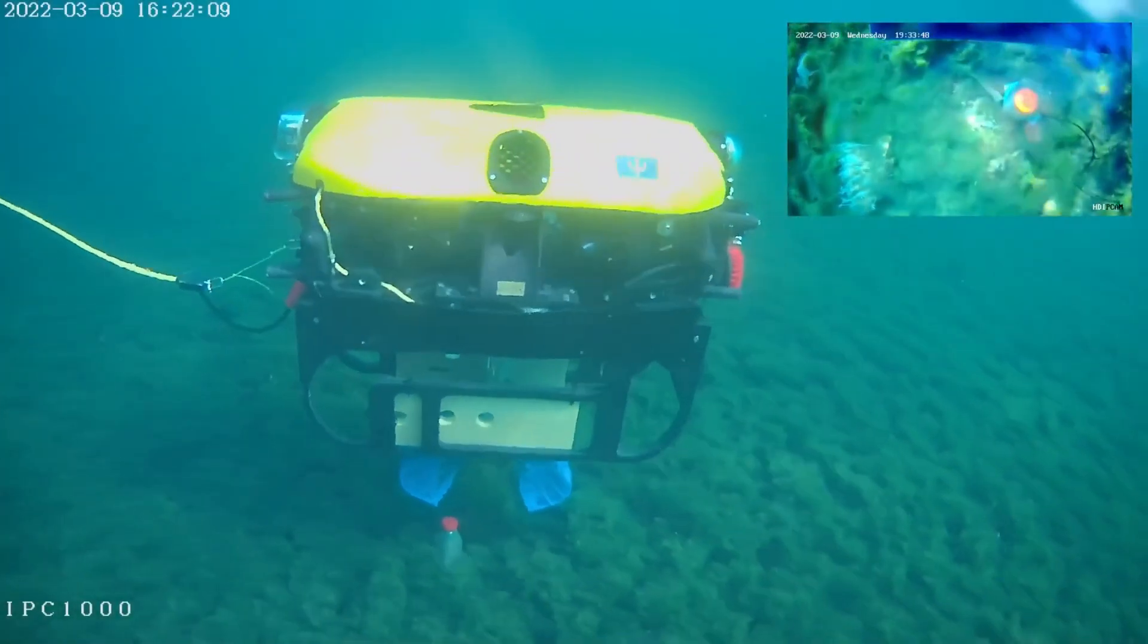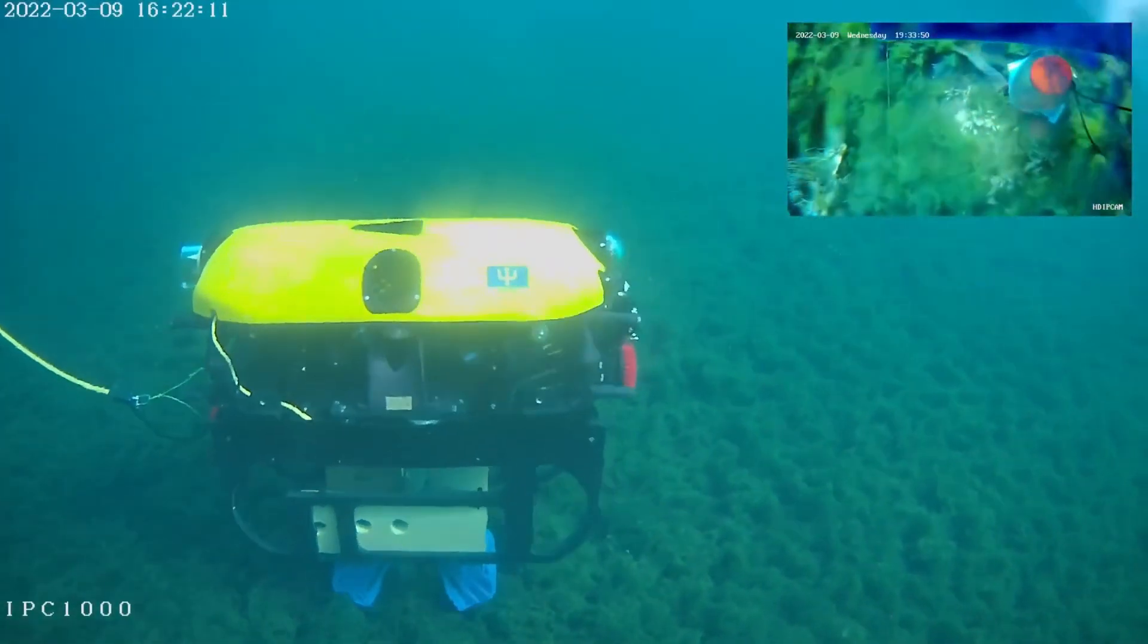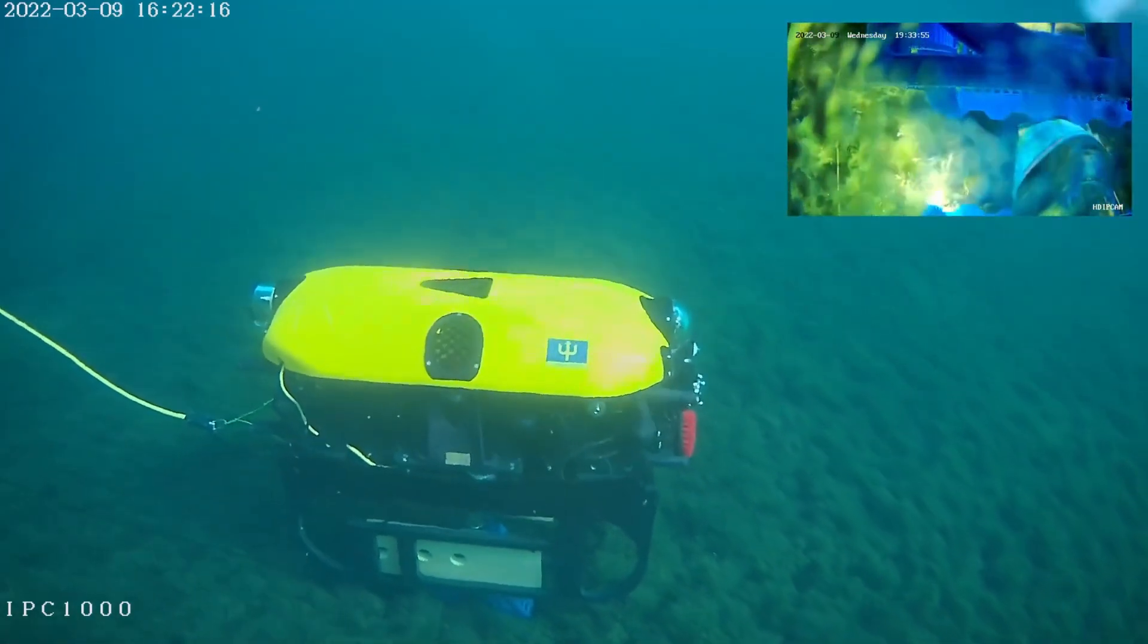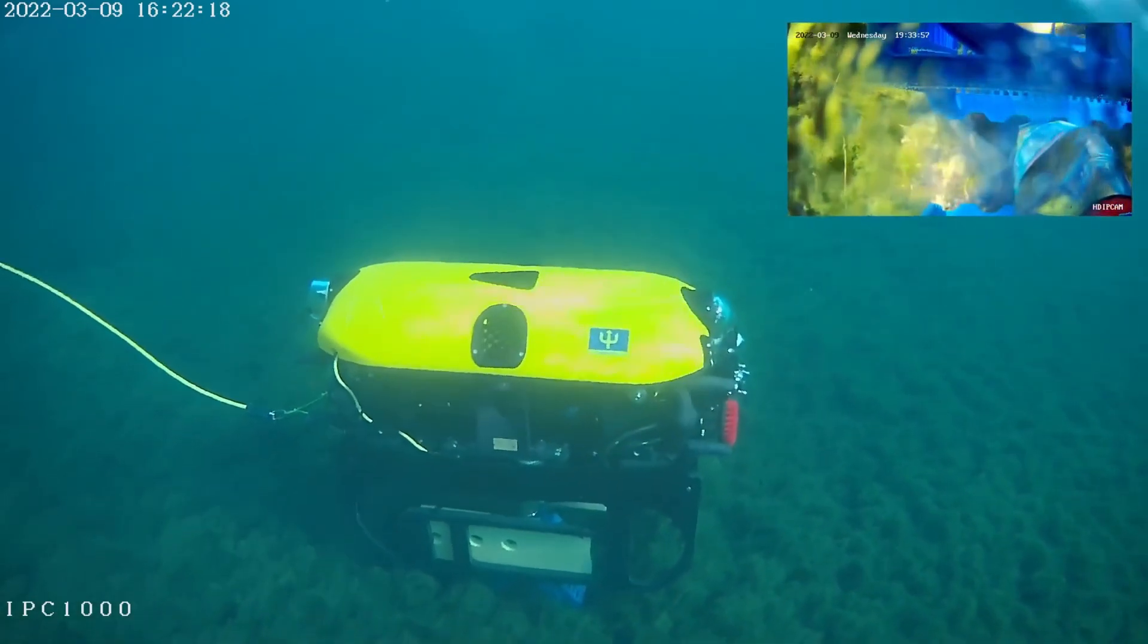Here we see the combined system of the collection robot with the gripper in action. The robot locates the bottle through its integrated camera that looks downward and proceeds to grasp it.